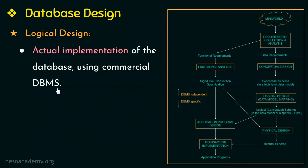The next step in the database design is logical design. This step is the actual implementation of the database using commercial DBMS like Microsoft SQL Server, Oracle, etc. Most commercial DBMS use an implementation data model, so the conceptual schema is transformed from the high-level data model into the implementation data model. This step is called logical design or data model mapping, and the result is a database schema in the implementation data model of the DBMS.